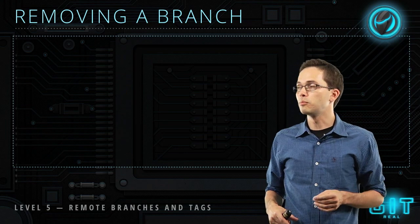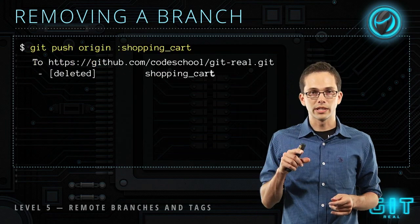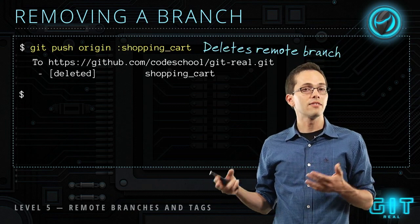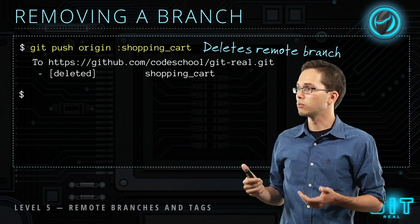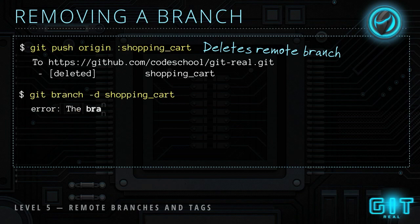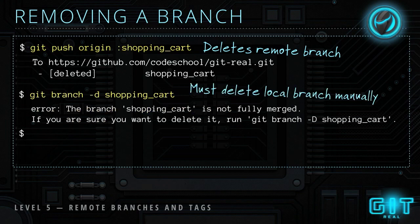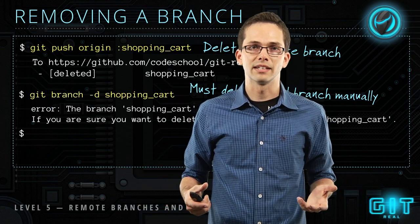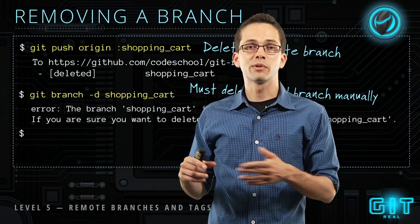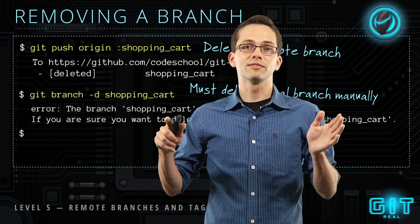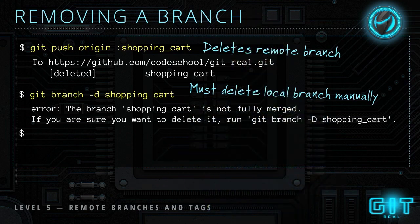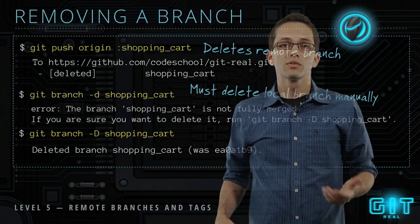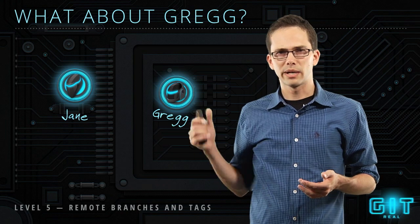Remote branches, just like local branches, don't last forever. When you're done with a feature, to delete the remote branch you run `git push origin :shopping-cart`. That only deletes the remote branch — you'll still have a local branch, so we also run `git branch -d shopping-cart`. If there are commits that haven't been merged anywhere, Git will warn you. But if you really do want to delete it, you can use capital `-D` and it will force delete the branch.